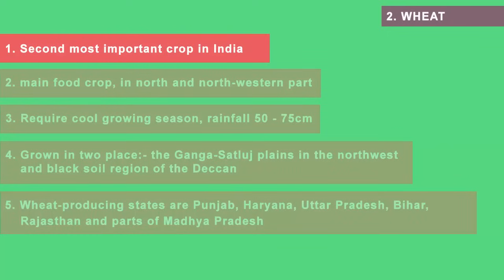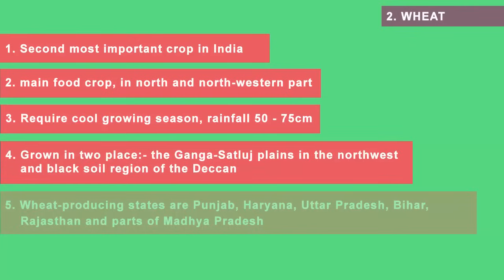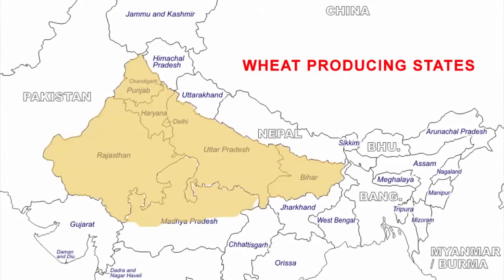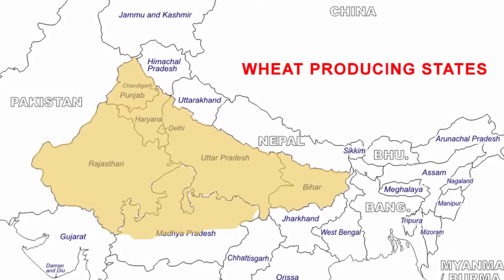The second crop is wheat. It is the second most important crop in India and the main food crop for people in the north and northwestern parts. This crop requires a cool growing season, meaning it is grown during winter — making it a Rabi crop. It requires a rainfall of 15 to 75 centimeters. The two important wheat-growing regions are the Ganga-Satlaj plain, covering Punjab, Haryana, Uttar Pradesh, Bihar, Rajasthan and Madhya Pradesh.